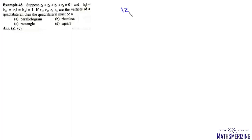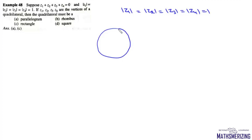Next question: z1 plus z2 plus z3 plus z4 equals 0, and mod z1 equals mod z2 equals mod z3 equals mod z4 equals 1. If z1, z2, z3, z4 are vertices of a quadrilateral, what must it be? Since all moduli equal 1, all four points lie on a unit circle centred at the origin.